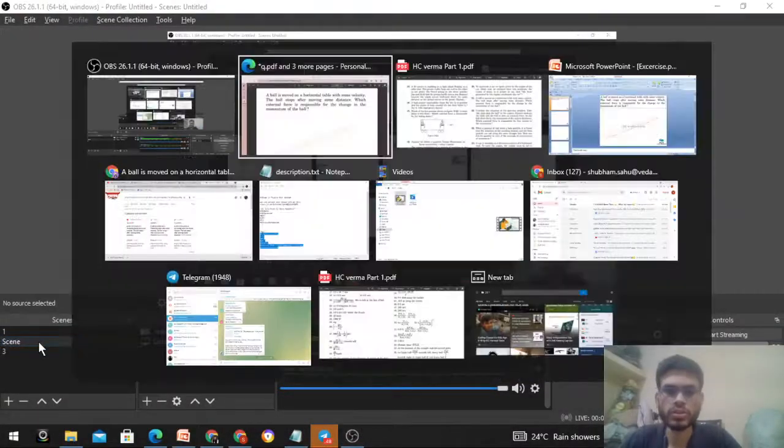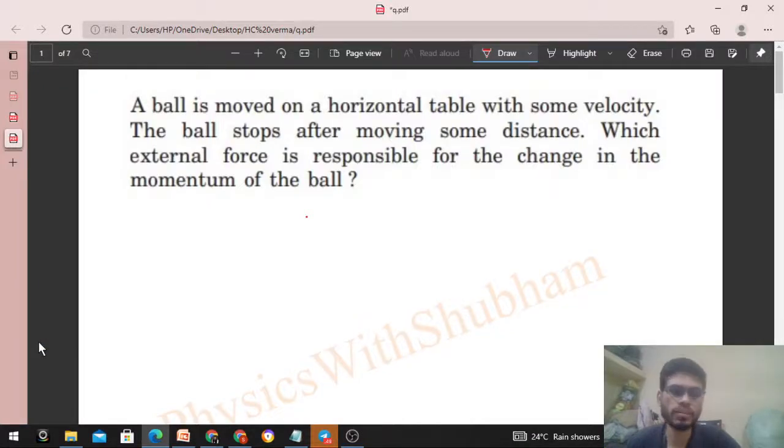Okay, hi everyone. So today let's discuss this problem. It says a ball is moved on a horizontal table with some velocity. The ball stops after moving some distance. Which external force is responsible for the change in the momentum of the ball?